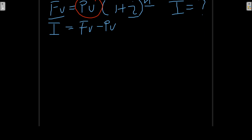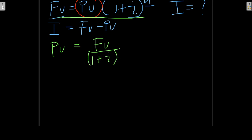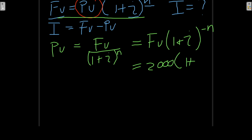We do our substitutions. Rearranging the compound interest formula to isolate the present value, we get: present value = future value ÷ (1 + i)^N, or equivalently future value × (1 + i)^(−N). Substituting: future value = 2,000 rands, interest rate = 16% per annum compounded annually, N = 5 years, so the exponent is −5.